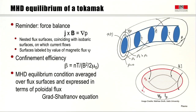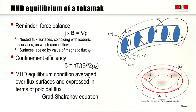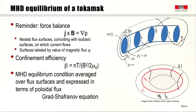Now let's look at the MHD equilibrium in a tokamak. As a reminder, the MHD equilibrium is given by the force balance condition J cross B equals grad P. This condition tells us that we have nested flux surfaces that coincide with isobaric surfaces on which the current flows. We can label these flux surfaces by the value of the magnetic flux psi captured by these surfaces. Beta — the ratio between the plasma pressure and the magnetic field pressure B squared over 2 mu-nought — is a measure of confinement efficiency. We can express the MHD equilibrium condition averaged over flux surfaces in terms of the poloidal flux, leading to the Grad-Shafranov equation.